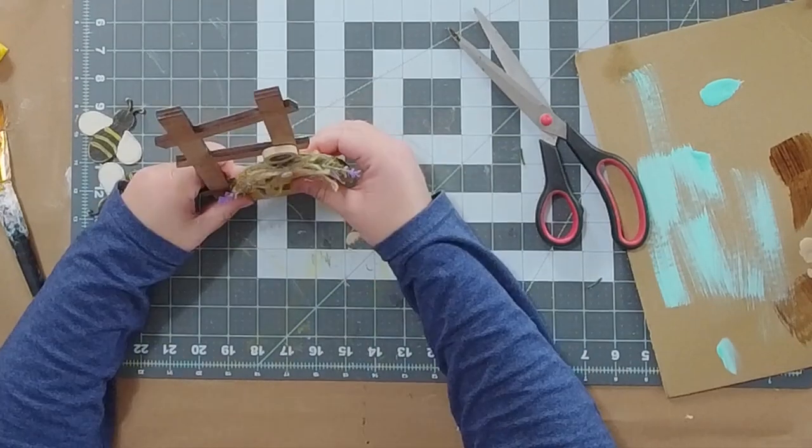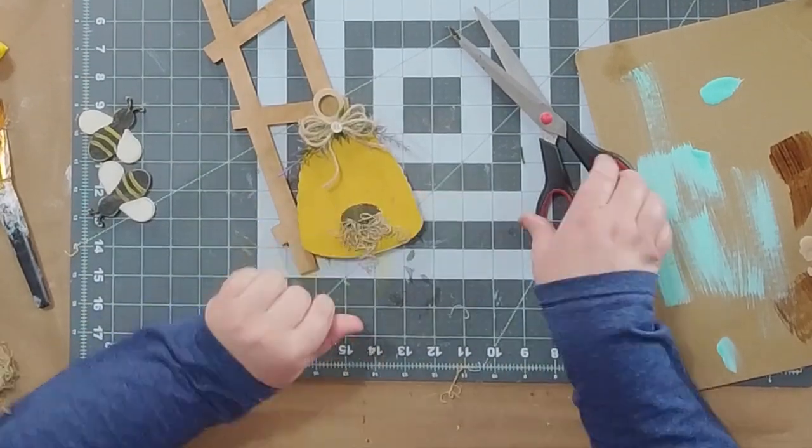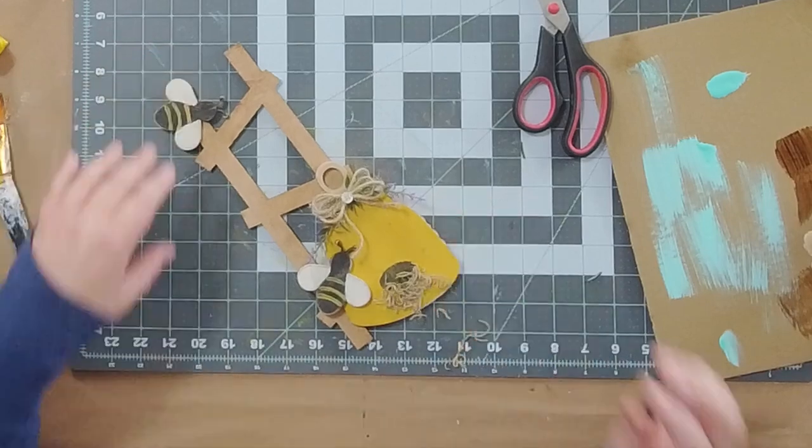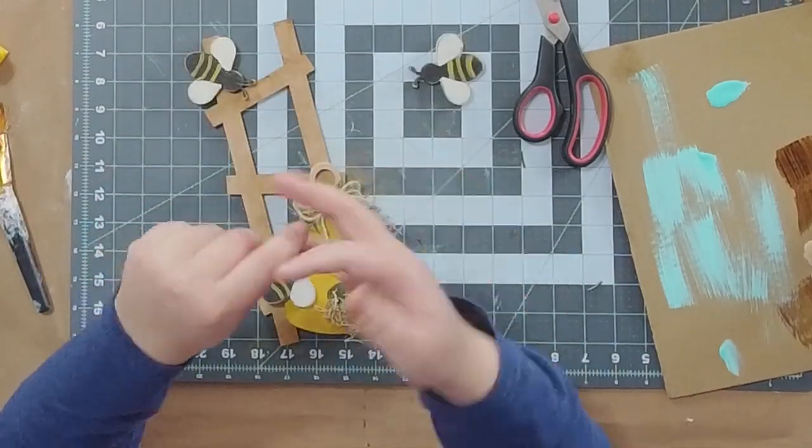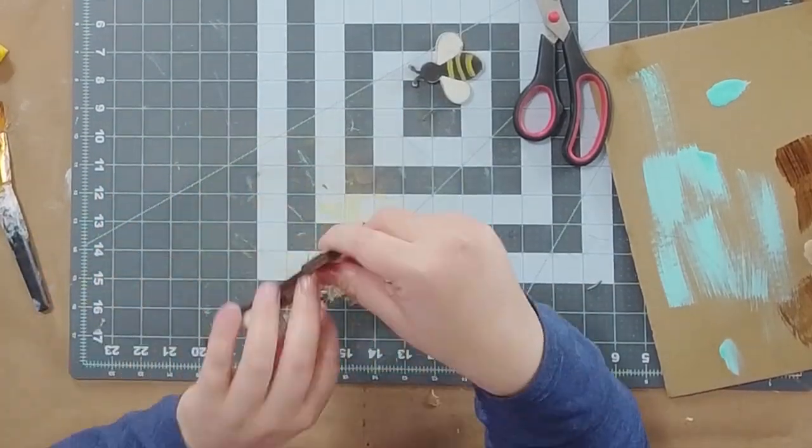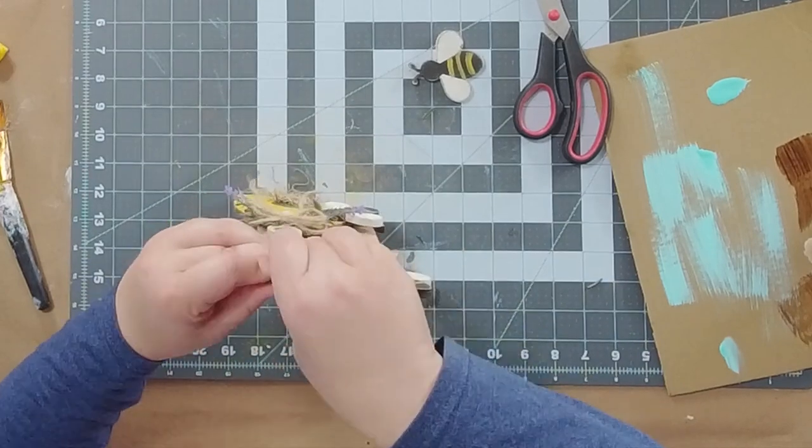We're going to hot glue the beehive in place along with the Spanish moss, and then we're going to start to glue our little bees. Two of your bees will be glued in place.